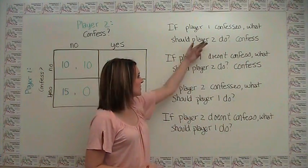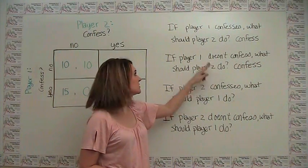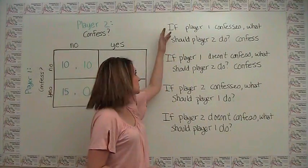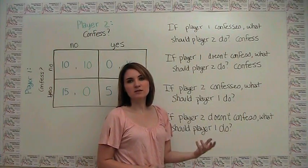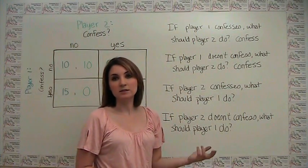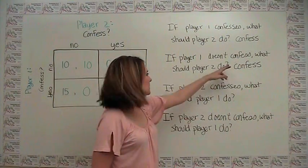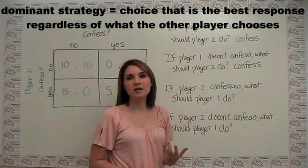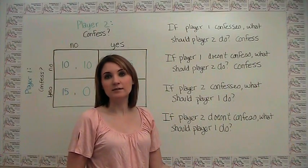Notice here that it's interesting that player 2, his best option is to confess regardless of what player 1 does. Or alternatively put, player 2's best option is to confess regardless of what he thinks player 1 is going to do. This type of situation is called a dominant strategy, in that confess is a dominant strategy for player 2, meaning it's always the best regardless of what the other guy does.